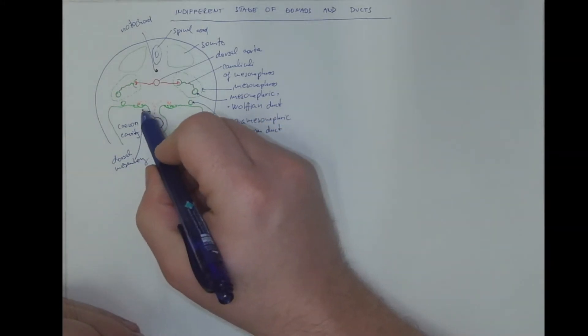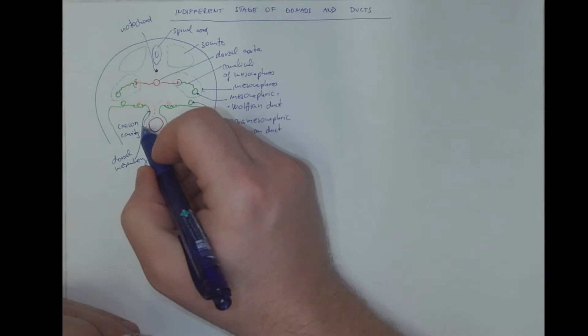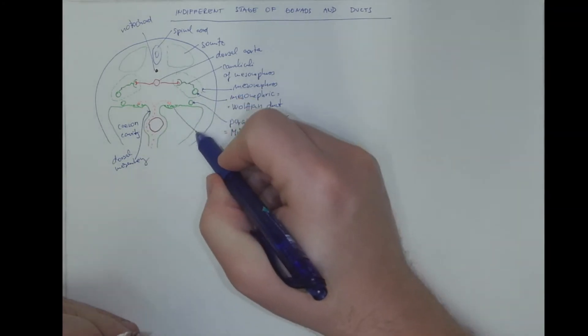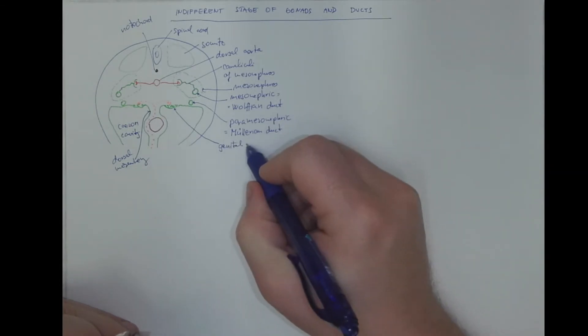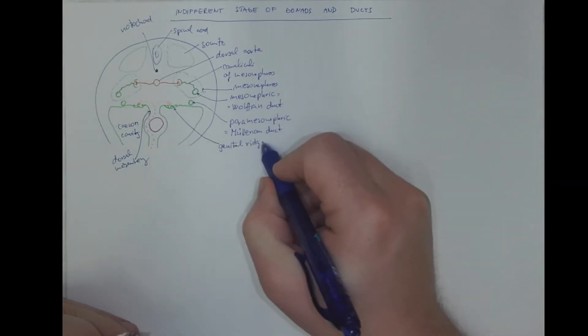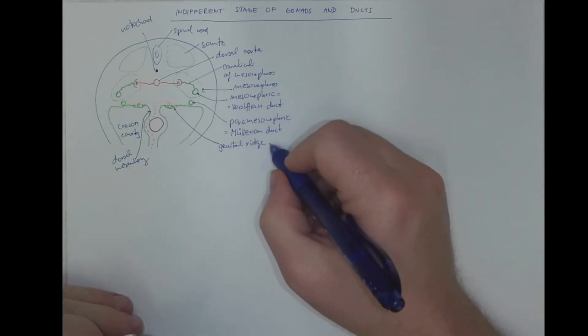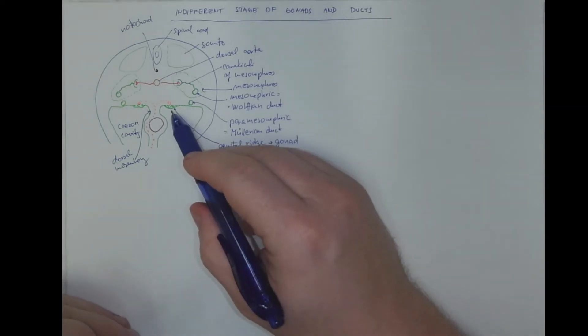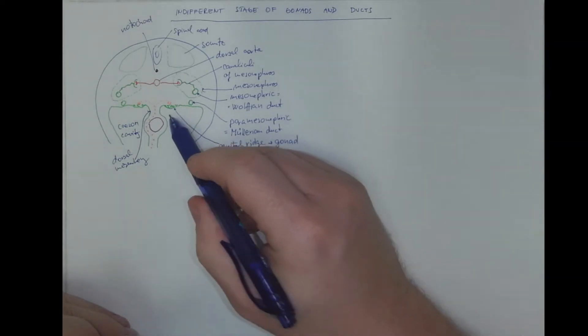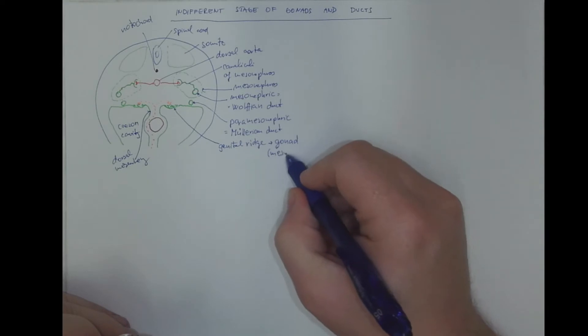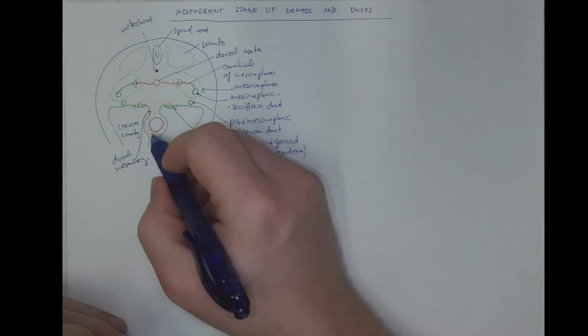This thickening of the dorsal body wall mesoderm is the genital ridge, and that's the primordium of a gonad. It's a primordium, the same for both the testis or the ovary. We know the epithelial component here originates from the mesoderm, as the color suggests. And this is the intestine.